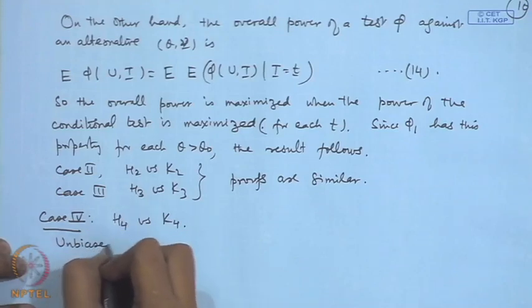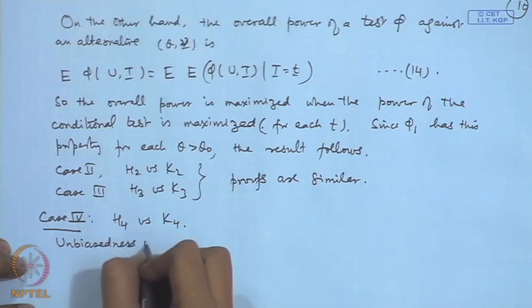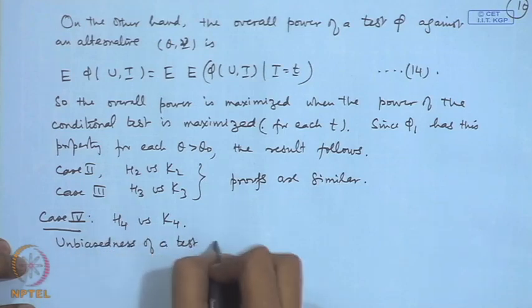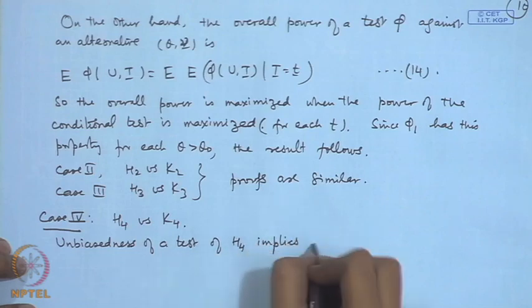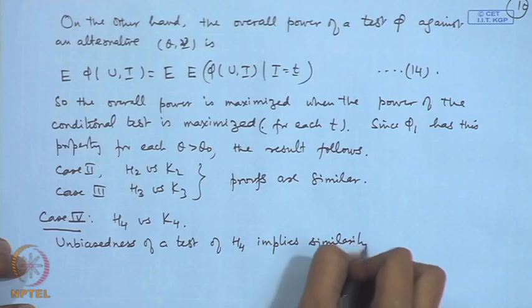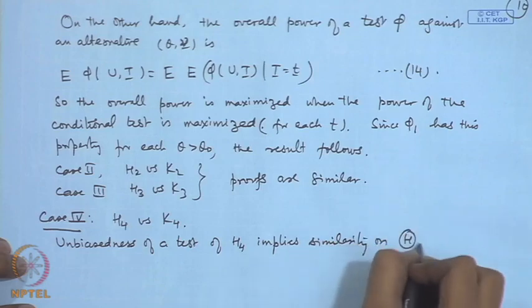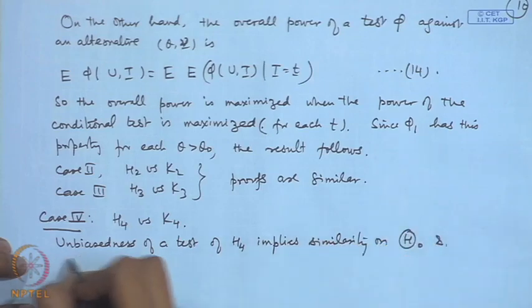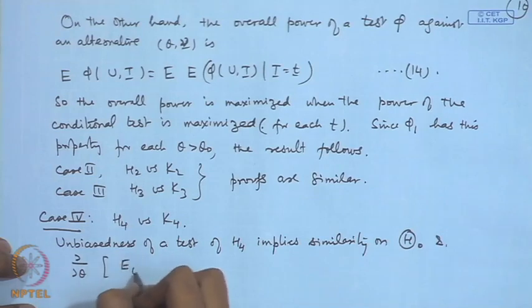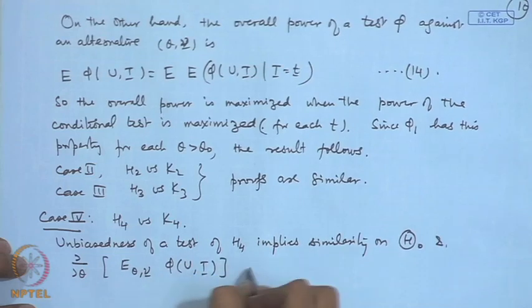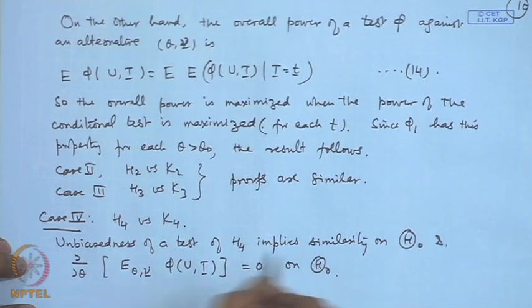Here unbiasedness of a test of h4 implies similarity on theta naught and del by del theta expectation theta nu phi(u,t) that will be equal to 0 on theta naught.